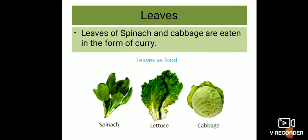Lettuce and cabbage are eaten as salad. Coriander — meaning dhanya — and mint — meaning pudina — are used to make chutney. Not every plant's leaves can be eaten; only some plant leaves are eaten as food, like spinach, cabbage, lettuce, coriander, mint, and many more.